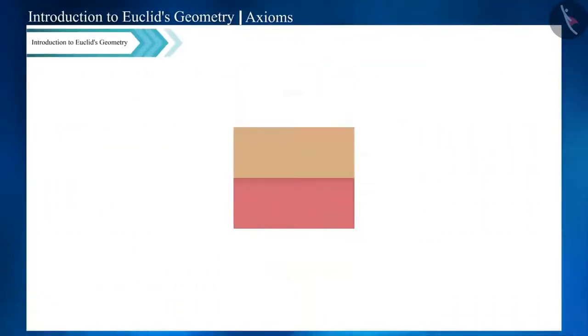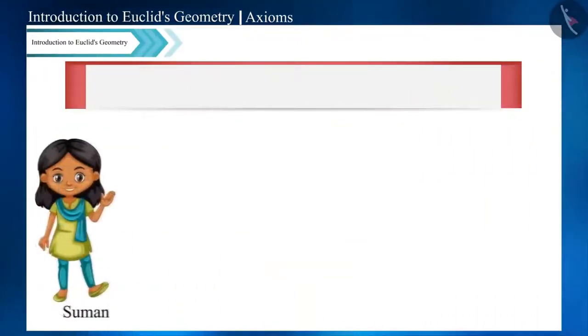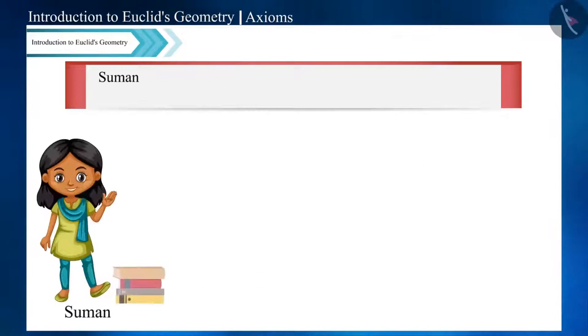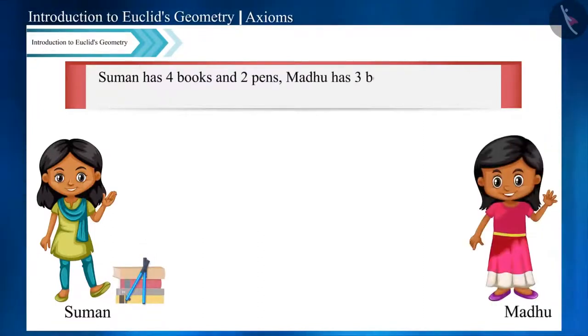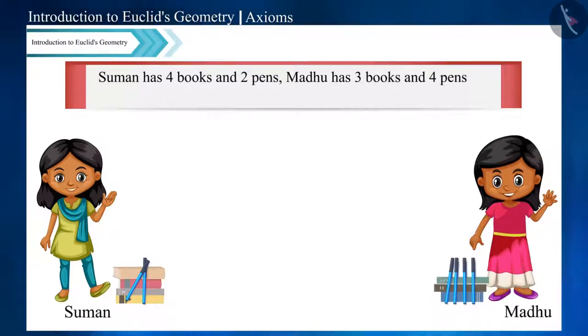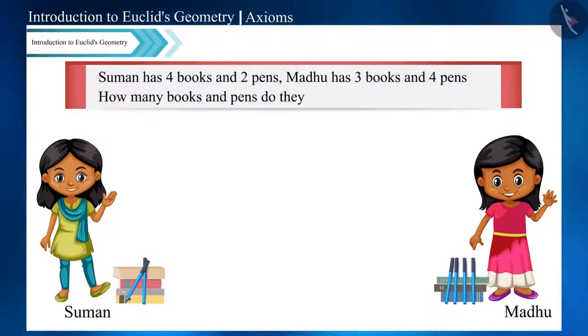Let's start with a question. Suman has four books and two pens. Madhu has three books and four pens. How many books and pens do they have in total?